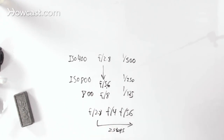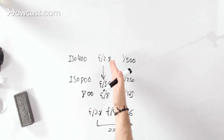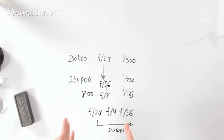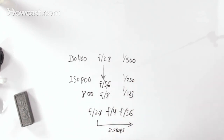ISO: as you go up, you're letting more light in. Aperture: as you go up, you're letting less light in. Shutter speed: as you go up, you're letting less light in — important to keep in mind. And that's the basics of exposure.